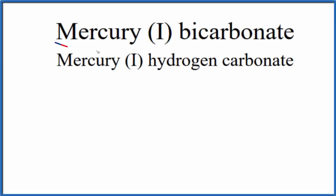In this video we'll write the formula for mercury (I) bicarbonate, also called mercury (I) hydrogen carbonate. Bicarbonate and hydrogen carbonate are the same thing. The thing you need to know when dealing with mercury (I) is that it's kind of a special case.